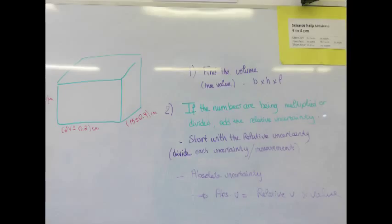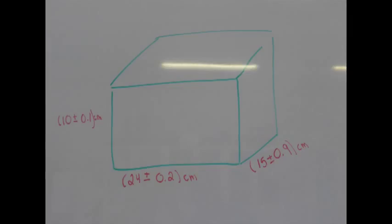You have to do that for the length, the base, and the height, because they are the values you're using to find the true value, which is the volume. Then you add the numbers together and you get the relative uncertainty. To find the absolute uncertainty, you use the formula: absolute uncertainty equals relative uncertainty multiplied by the true value. Please find the true value and the uncertainties for this prism.